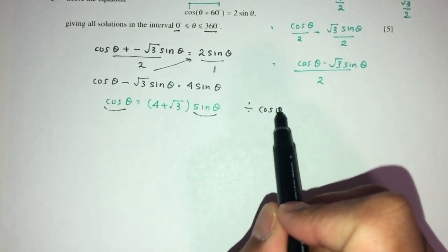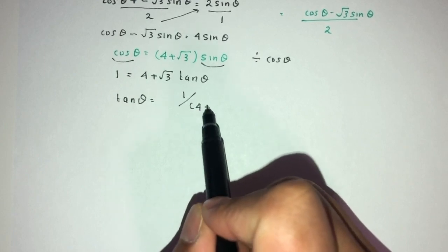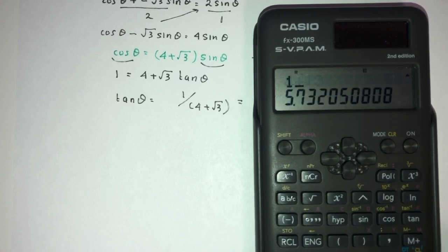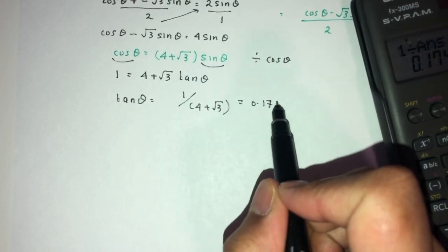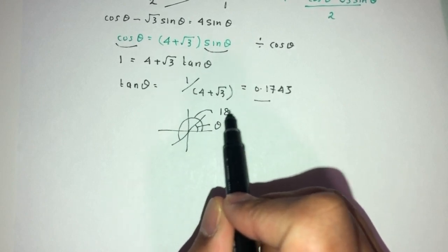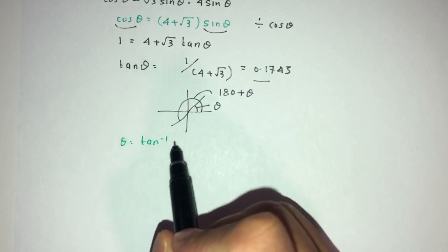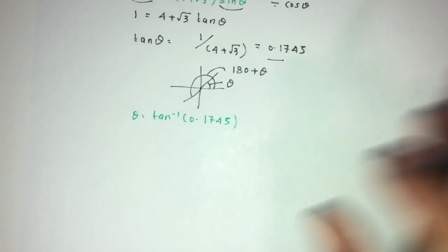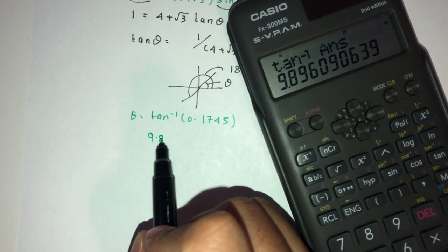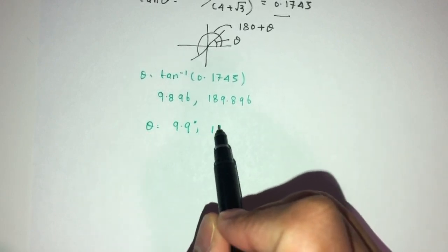Dividing both sides by cos θ gives 1 equals (4 plus root 3) tan θ, so tan θ equals 1 divided by (4 plus root 3), which equals approximately 0.1745. Since tan θ is positive, θ lies in the first and third quadrants. Therefore θ equals tan inverse of 0.1745, giving 9.9 degrees, and 180 plus 9.9 equals 189.9 degrees, to one decimal place.